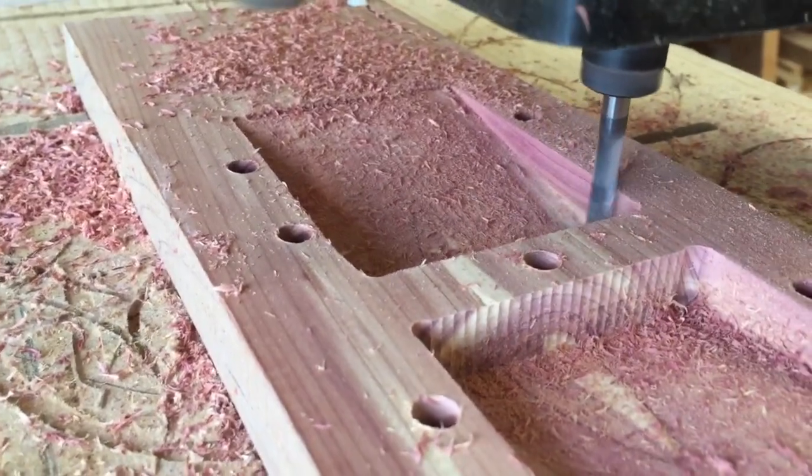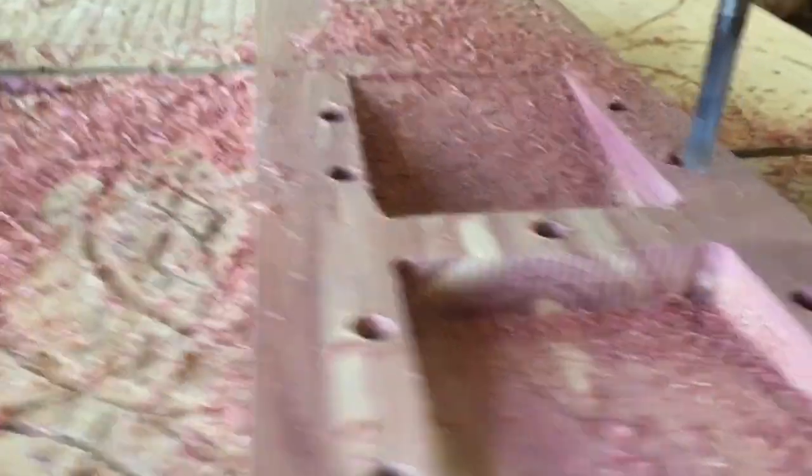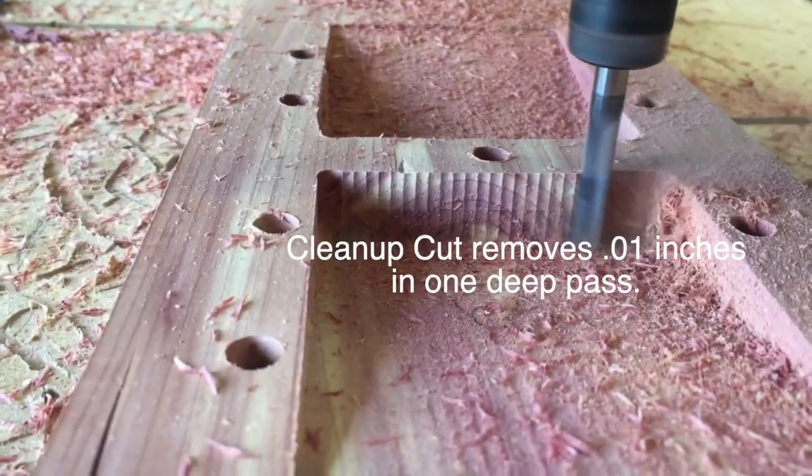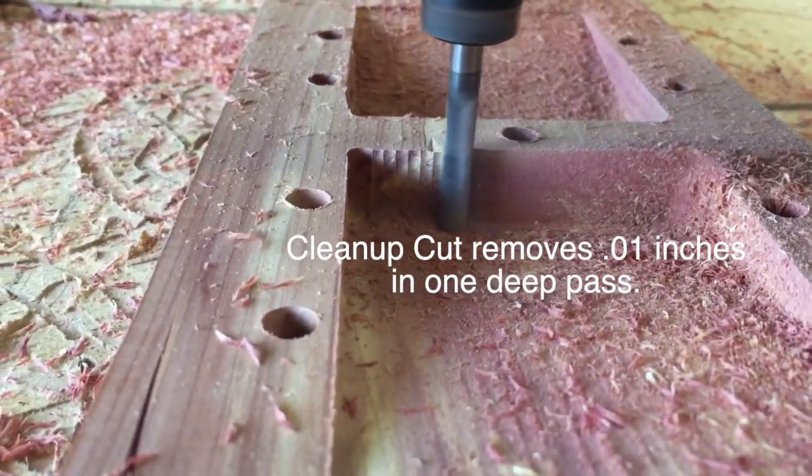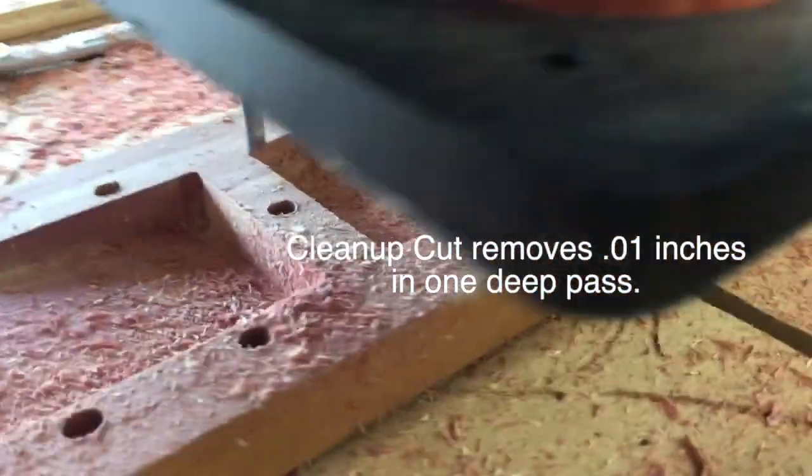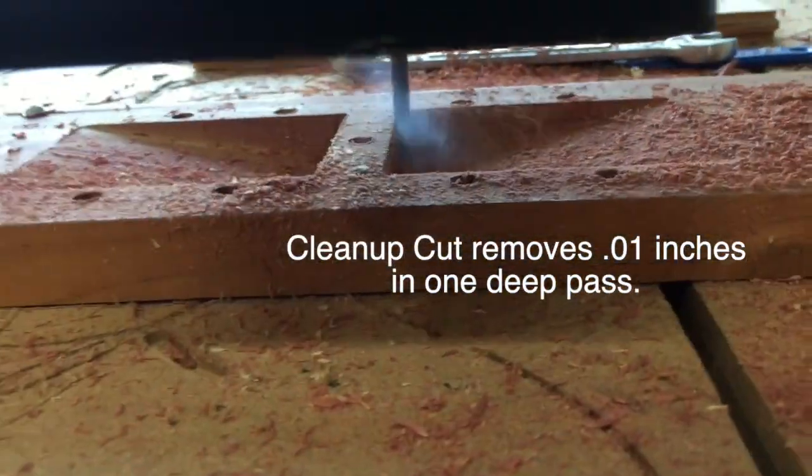You're going to see it come down and clean that up. It takes care of a lot of sanding. Now if you notice the rippling on the end, watch how that goes away when it comes across for the deep cleanup cut. See, it just cleaned that right up. All the sanding that you'd have to do to fix that is quite extensive, so that helps clean that all up.